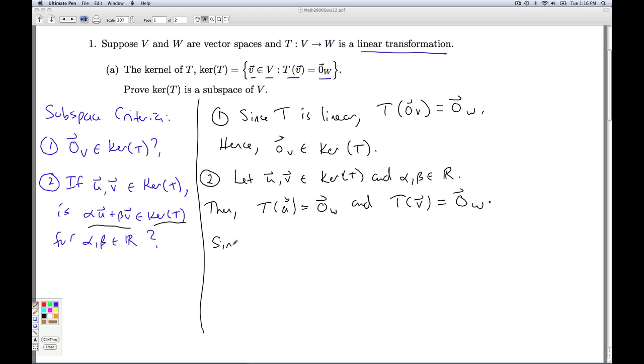T of alpha U plus beta V by linearity is alpha T of U plus beta T of V. Linear transformations preserve linear combinations. But T of U is what? That's the zero vector in W. And that's the zero vector in W as well.